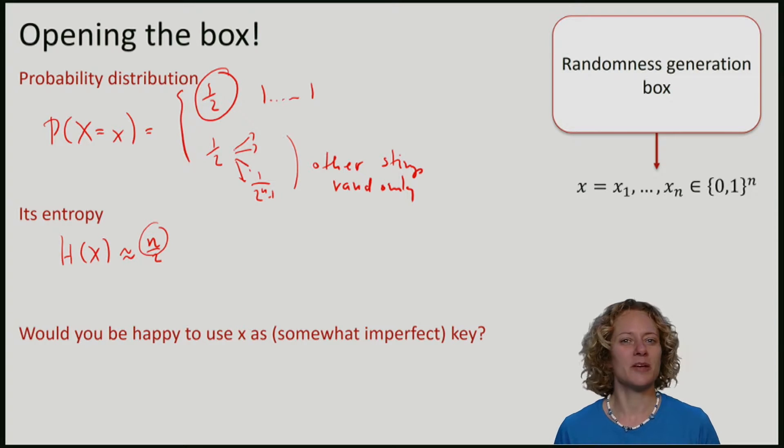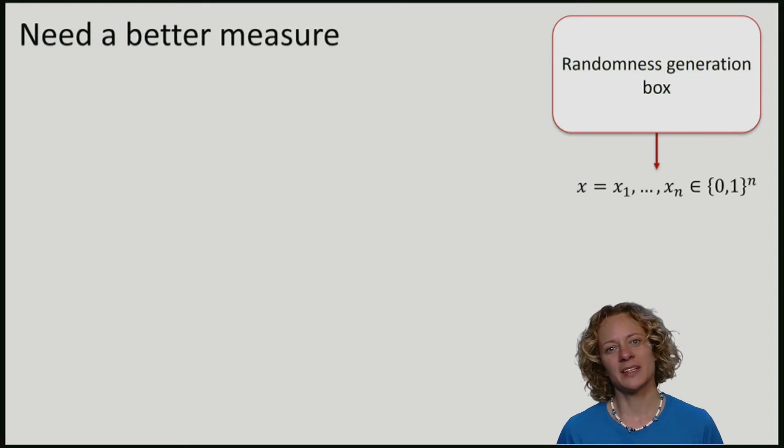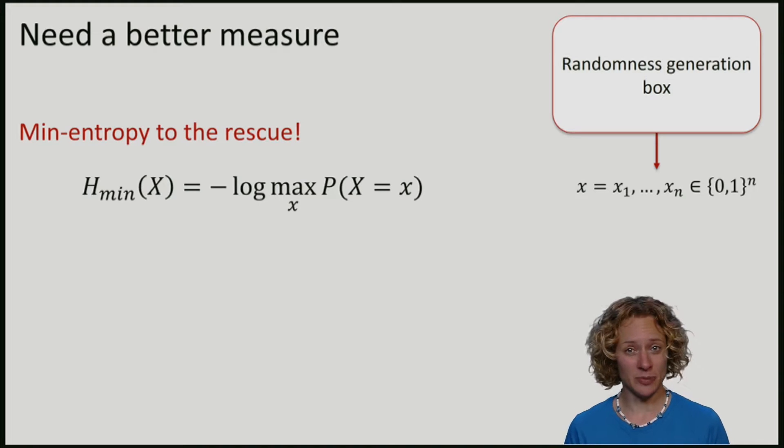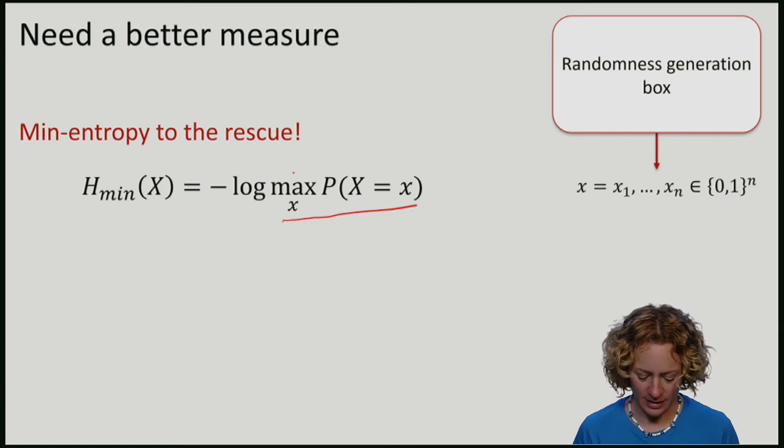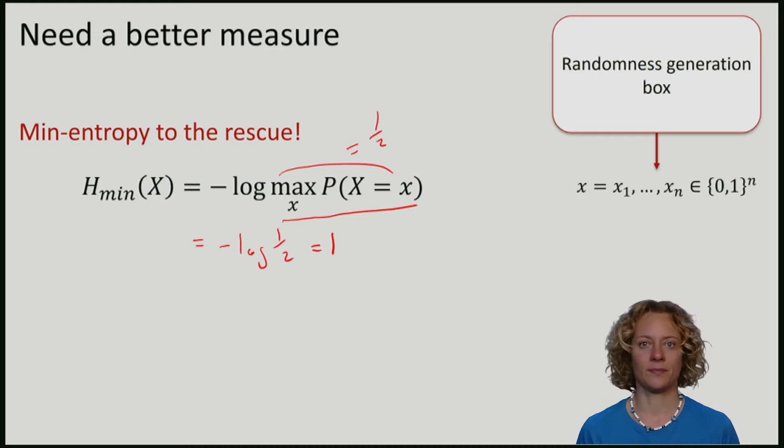We thus need a better measure. It turns out that in cryptography, the relevant measure is called the min entropy. The min entropy is defined as minus the log of the largest element of my probability distribution. In our example, the largest element was a half, so the entropy is minus log of a half, which is 1. So the min entropy is constant, it does not grow with n.